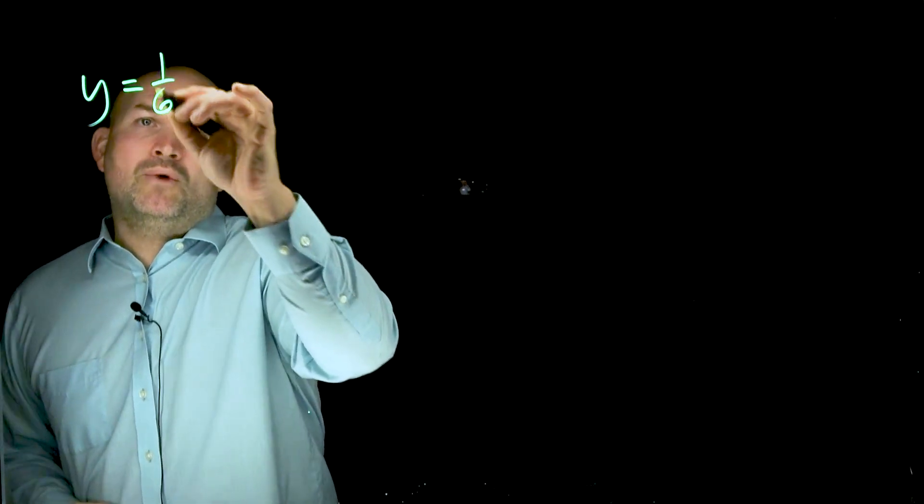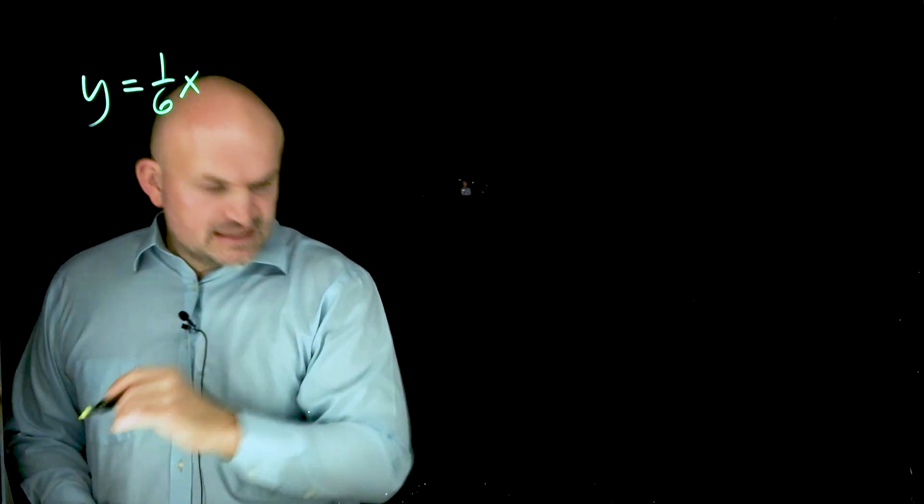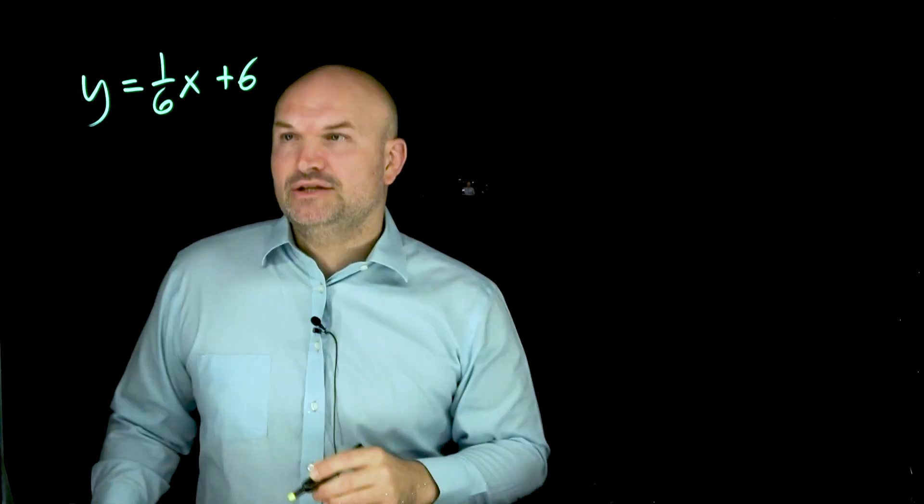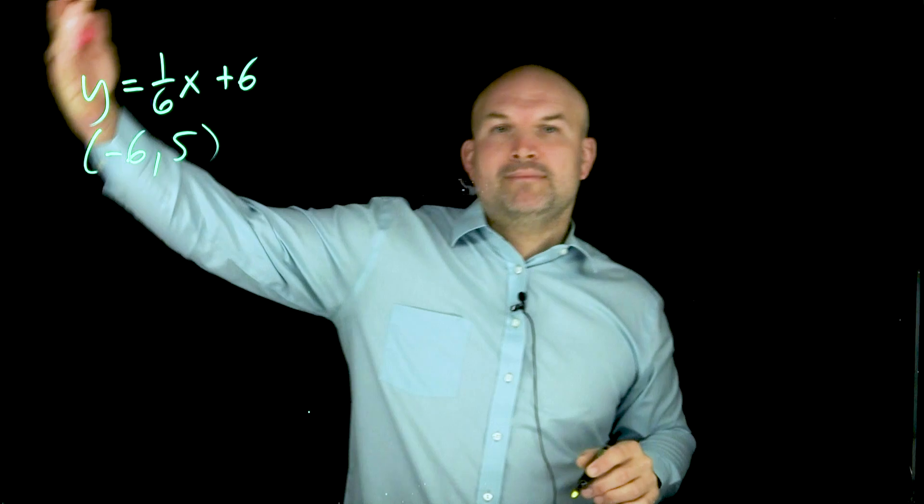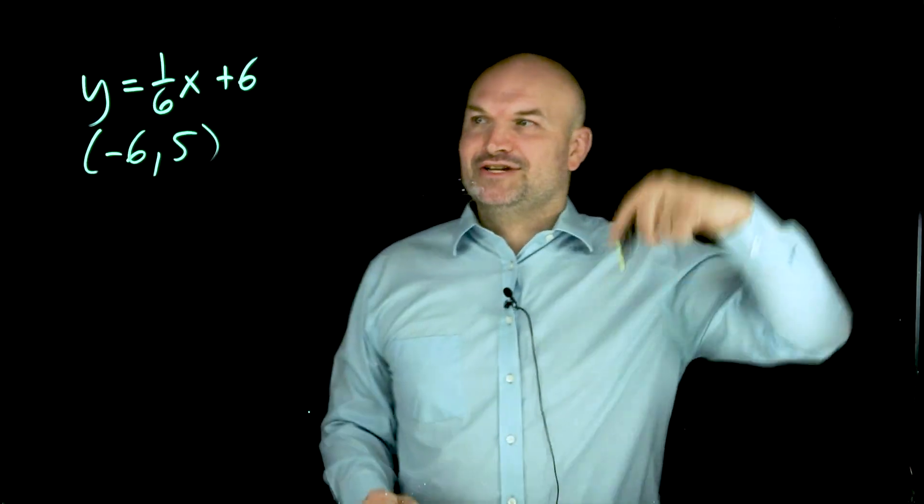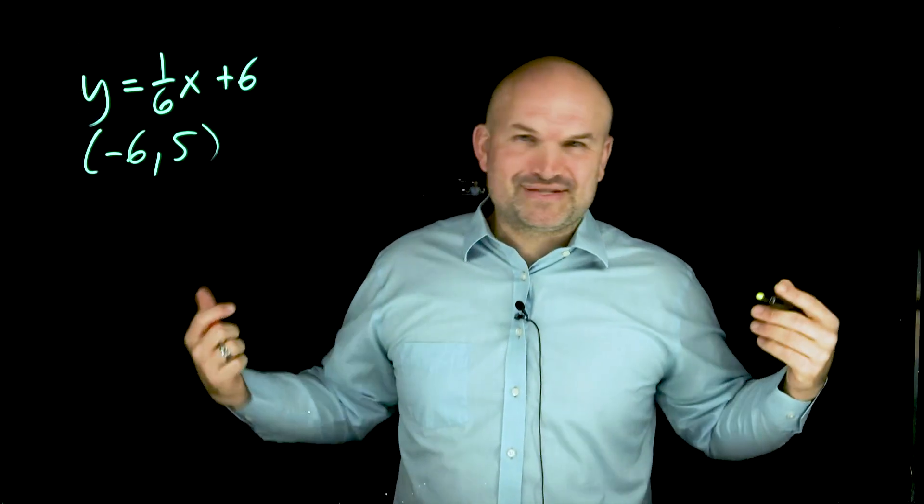I need to fix the mistake and show you what I should have done if I had a little time and wasn't on a live stream. As previously shown, we have an equation of a line, Y equals one-sixth X plus six. And we want to determine how far this point is from the line. I graphed it but did a slope of six over one instead of one over six. That was my mistake. It happens.